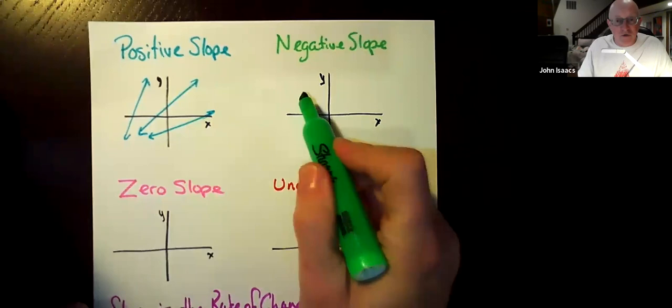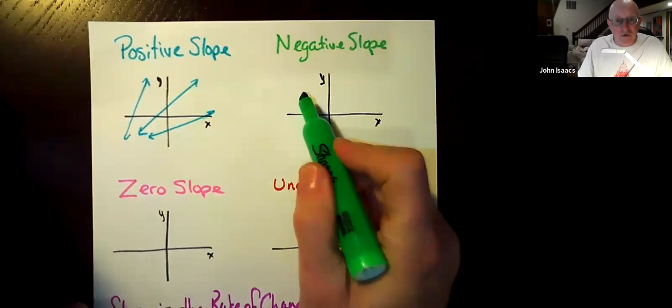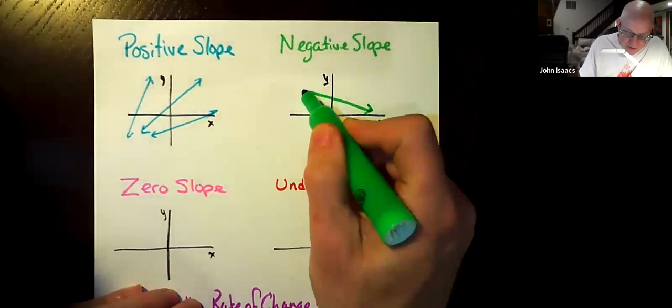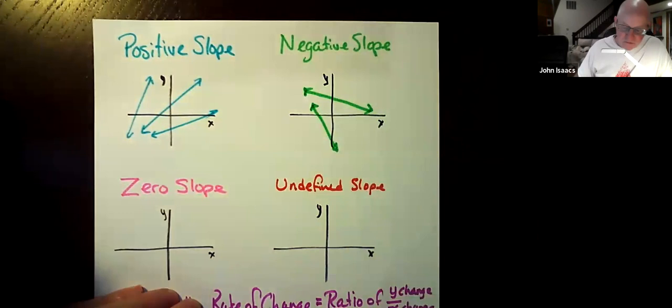Negative slope. Negative slope, as we go across from left to right, the line goes down. So that would be an example of negative slope. Or it could go down like this. This would be negative slope.